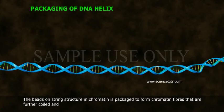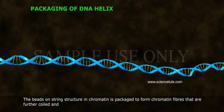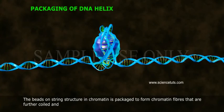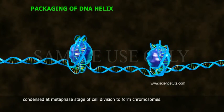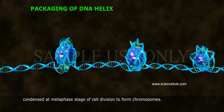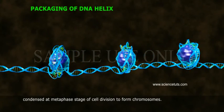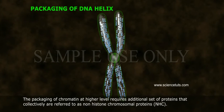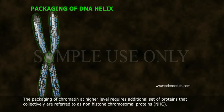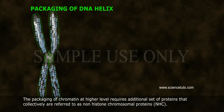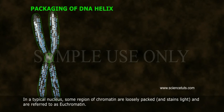The beads-on-string structure in chromatin is packaged to form chromatin fibers that are further coiled and condensed at the metaphase stage of cell division to form chromosomes. The packaging of chromatin at a higher level requires an additional set of proteins that are collectively referred to as non-histone chromosomal proteins.